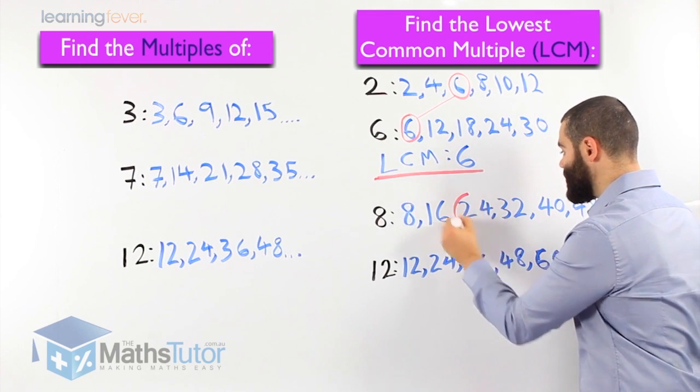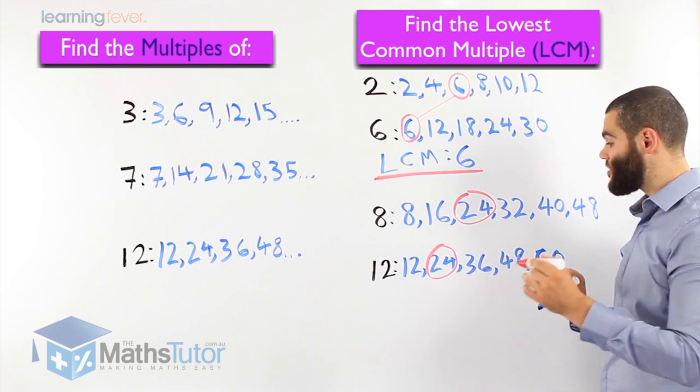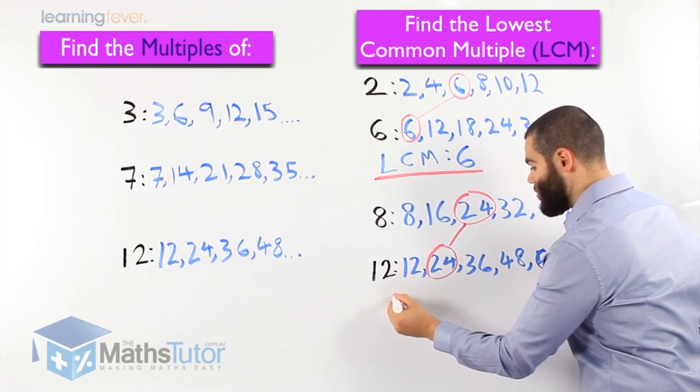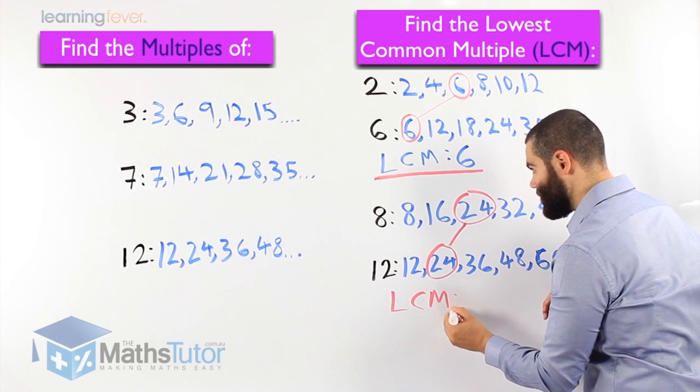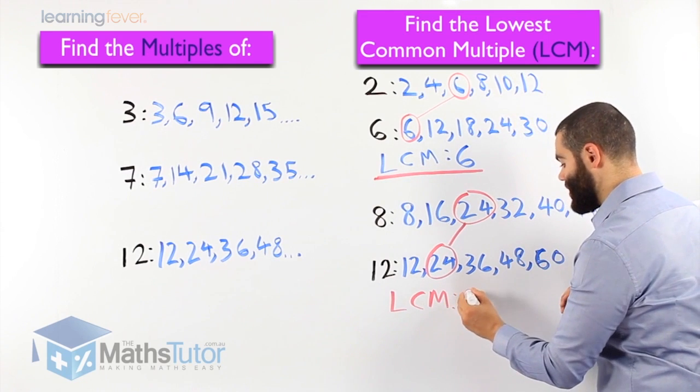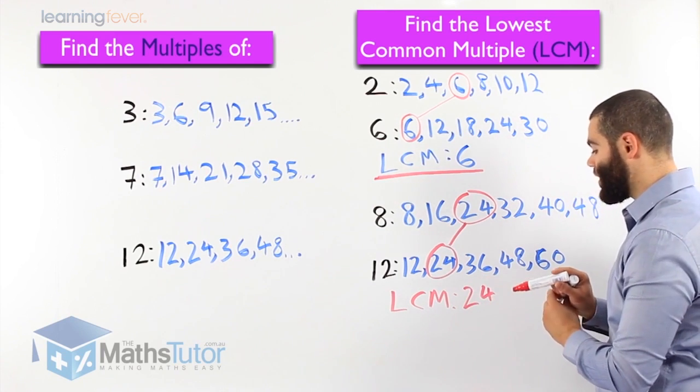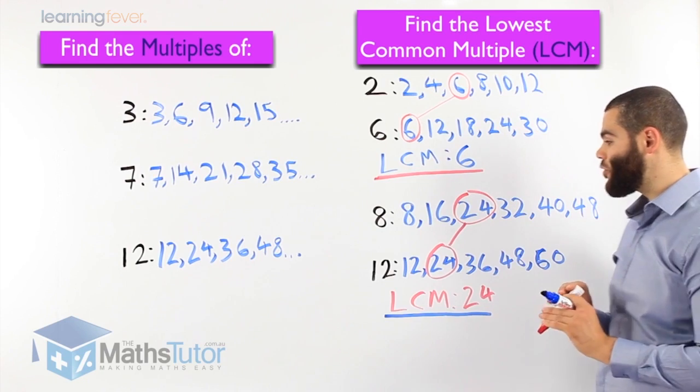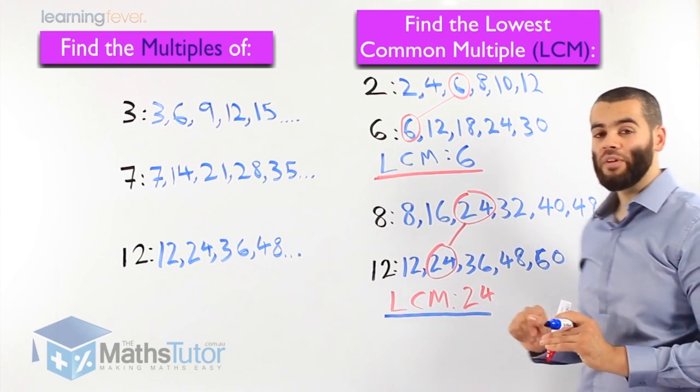In this case here, this one is common and this one is common. So if they're common, are they the lowest common ones? Yes, they are. Therefore, our lowest common multiple is 24. So our lowest common multiple here is 24. Lowest common multiple between 8 and 12 is 24.